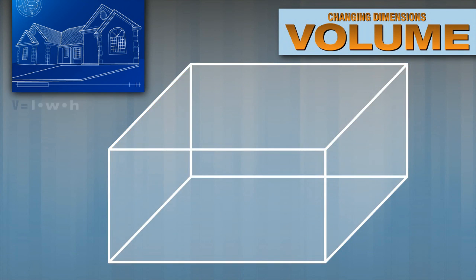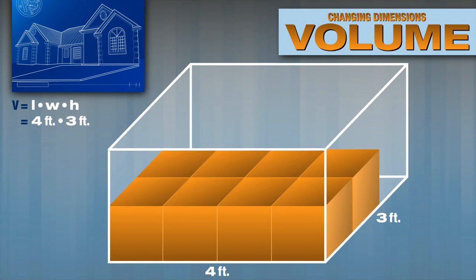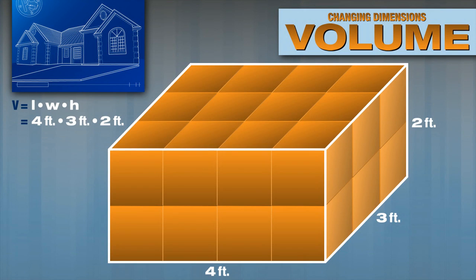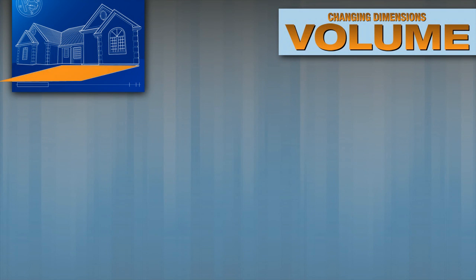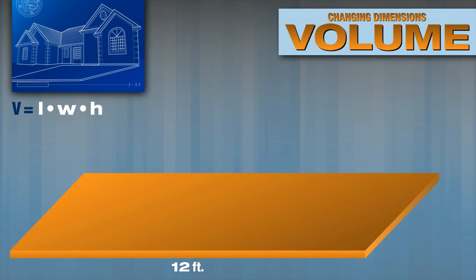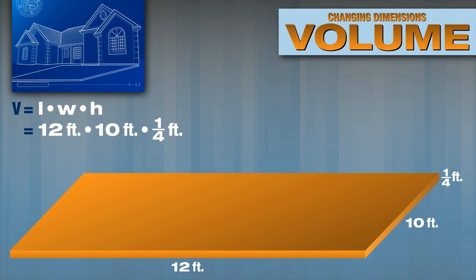For example, the volume of a rectangular prism measuring 4 feet by 3 feet by 2 feet is 24 cubic feet. The old patio we are replacing was 12 feet long by 10 feet wide by 3 inches thick. As you know, 3 inches is equal to one-fourth foot. So the volume is 12 times 10 times one-fourth, which is 30 cubic feet.